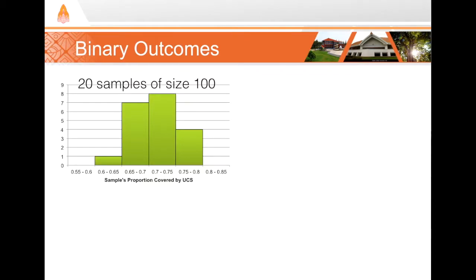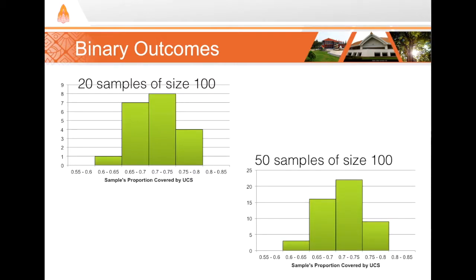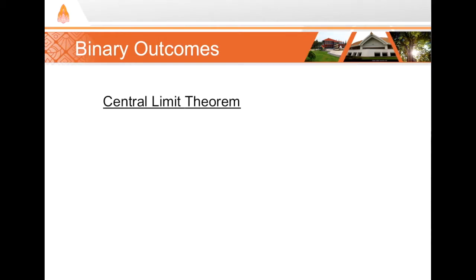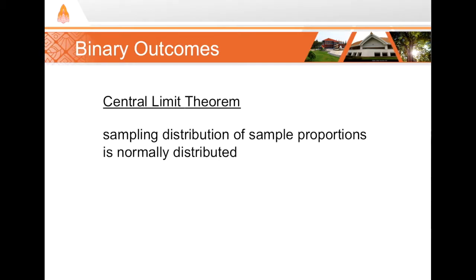If I did that 20 times and made a histogram of my sample proportions, and kept going to 50 total samples, the sampling distribution looks normally distributed. It turns out binary outcomes have sampling variability, and the sampling distribution of sample proportions is normally distributed — so we can apply the central limit theorem to binary outcomes as well.